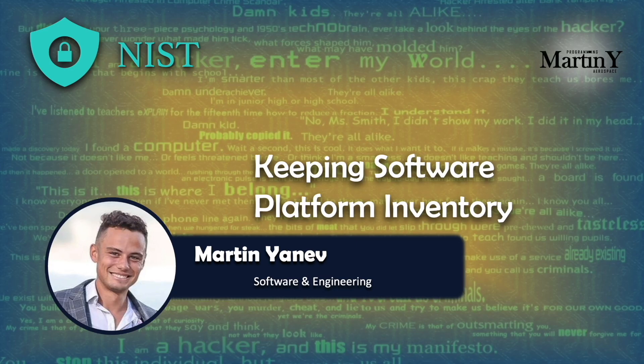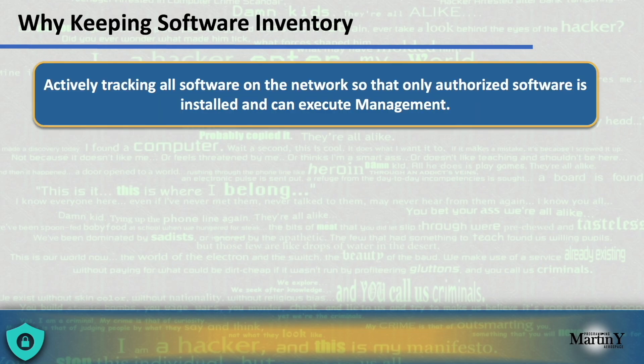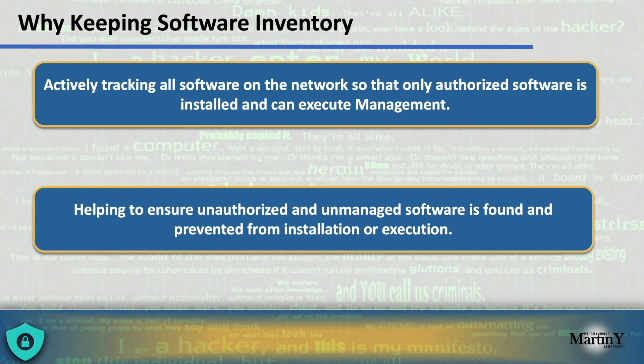Keeping Software Platform Inventory. In the real world, you don't only need to keep hardware inventory, but also software inventory. The NIST framework subcategory that covers this aspect of cyber risk management is known as ID.AM-2: Software Platforms and Applications Within the Organization Should Be Inventoried. In the same way as we inventory every physical device, it is equally important to inventory software, which will help you actively track all software in the network so only authorized users can use authorized software. This also helps to find unauthorized software on devices and make sure it cannot be installed, or is uninstalled automatically.